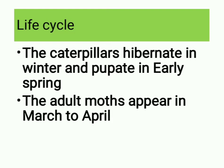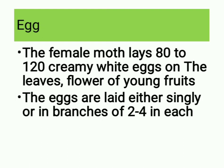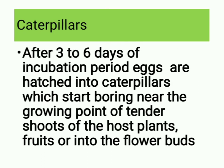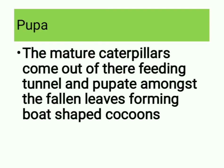Egg: the female moth lays 80 to 120 creamy white eggs on the leaves, flowers or young fruits. The eggs are laid either singly or in batches of 2 to 4. Caterpillars: after 3 to 6 days of incubation period, eggs are hatched into caterpillars which start boring near the growing point of tender shoots of the host plants, fruits or into the flower buds.